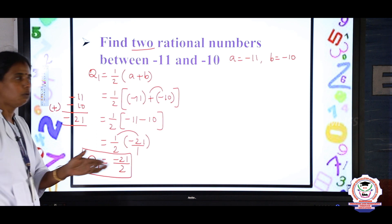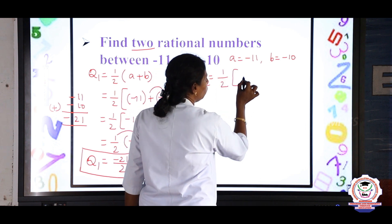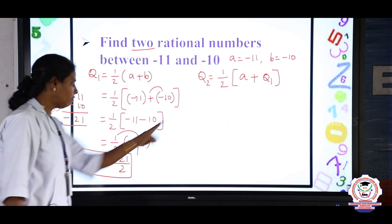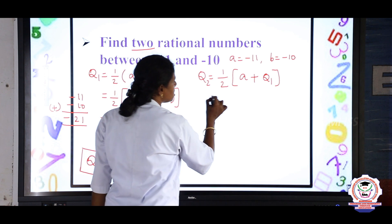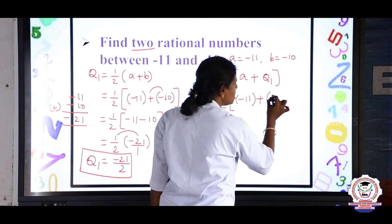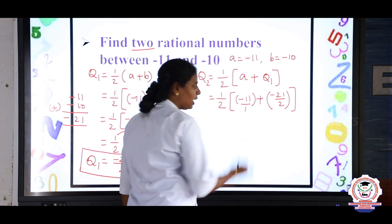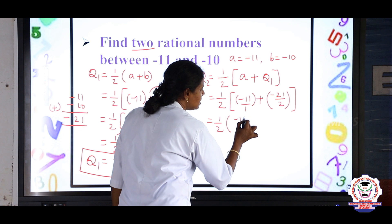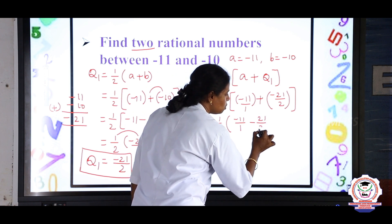Next, we are going to find Q2. Q2 = 1/2 × (A + Q1). A = minus 11 and Q1 = minus 21/2. Substitute: 1/2 × (minus 11 + minus 21/2). We consider minus 11 as minus 11 by 1. Now remove the bracket: 1/2 × (minus 11/1 + minus 21/2). We are going to use the cross multiplication method to solve these two rational numbers.